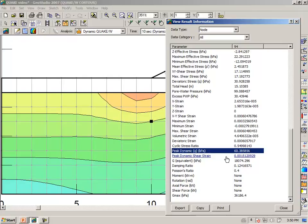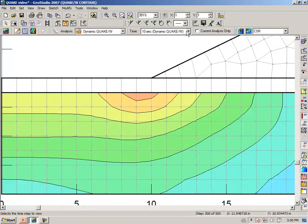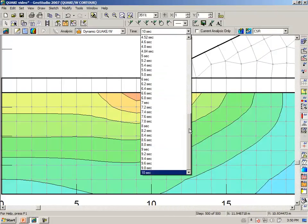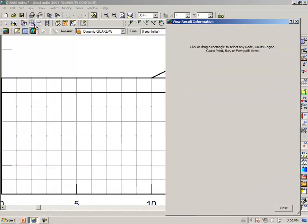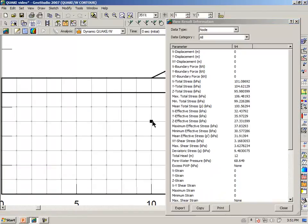To hand calculate the cyclic stress ratio, we need to go to our initial stresses at time 0. Again we say View Result Information, and looking at the same node, we notice that the vertical effective stress at that point is 35.97.